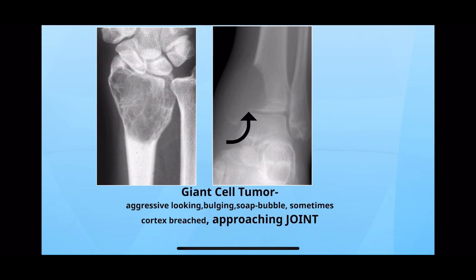Giant cell tumor is a locally aggressive benign tumor — it will give you the look of a malignant lesion, but it is not malignant. There will be a large soap-bubble lytic lesion approaching the joint. You can see here the joint is almost invaded — in radius and in tibia also.